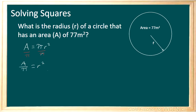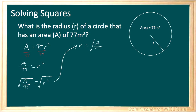Now that we have R squared by itself, we can take the square root of both sides. That gives us the square root of A divided by pi equals the square root of R squared. From our last example, we know that the square root of something squared cancels out, so we're left with R is equal to the square root of A over pi.